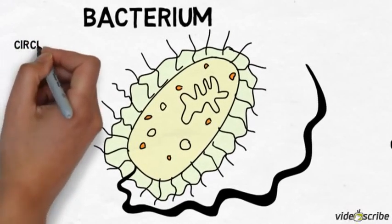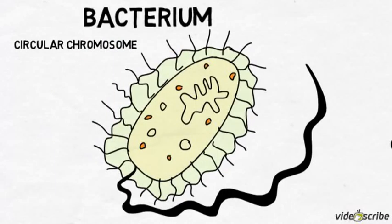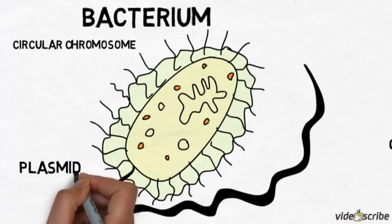It has a loose circular chromosome of DNA inside its cytoplasm, and it will have some small circular plasmids, which are small bits of DNA inside its cytoplasm as well.